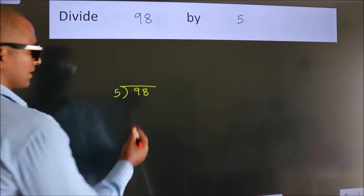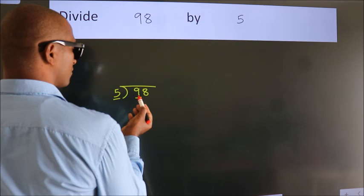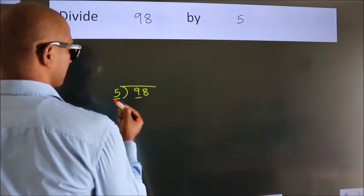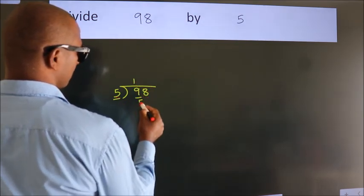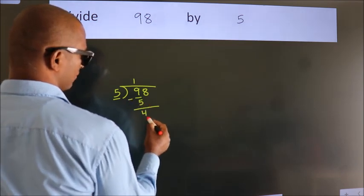Next, here we have 9, here 5. A number close to 9 in the 5 table is 5 once 5. Now we should subtract. We get 4.